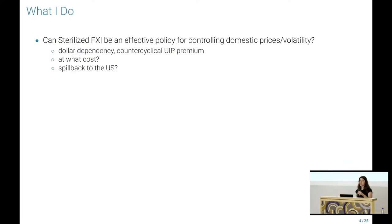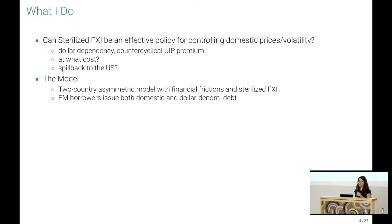I try to understand if sterilized FXI can be an effective policy for controlling domestic prices or domestic volatility. I consider dollar dependency in emerging markets and the counter-cyclical UIP premium. I use a two-country model to understand what are the costs of this kind of policy, and what are possible spillbacks to the United States. The model is as simple as I can make it: a two-country asymmetric model with financial frictions and a sterilized FXI policy.